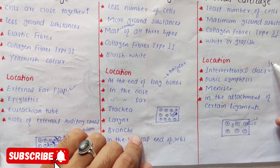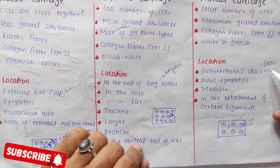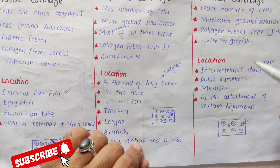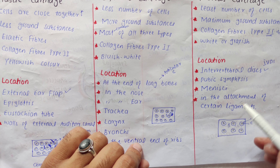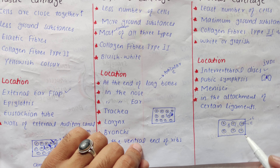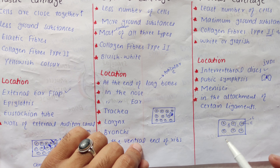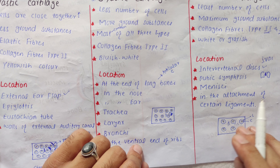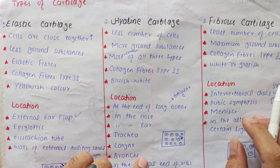Location کی بات کی جائے تو fibrous cartilage، intervertebral disc میں پایا جاتا ہے جو کہ shock absorb کرتا ہے۔ اس کے علاوہ pubic symphysis میں پایا جاتا ہے، جہاں right pelvic اور left pelvic آپس میں ملتے ہیں۔ Menisci میں — جو knee joint میں پائے جاتے ہیں — اور in the attachment of certain ligaments بھی fibrous cartilage پایا جاتا ہے۔